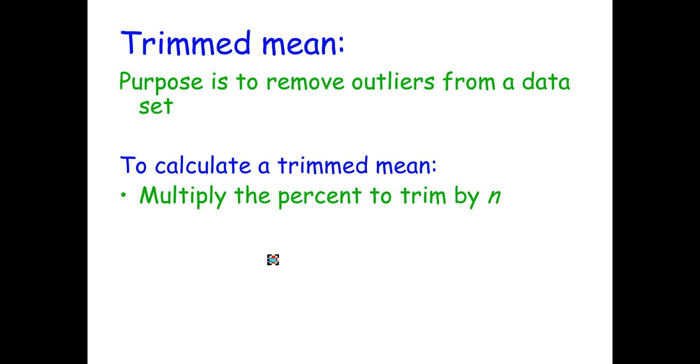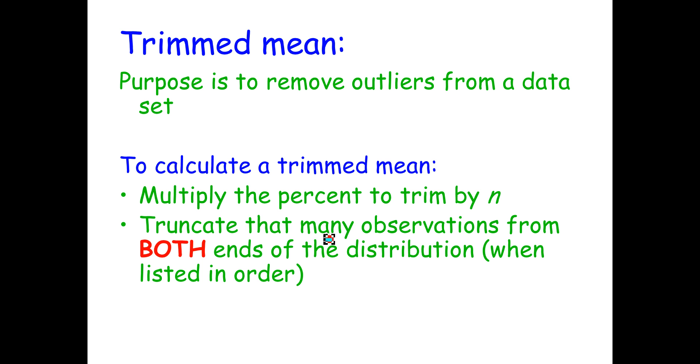And to calculate the trimmed mean, what we're going to do is essentially take off a data point from each end of the data set. I can't stress enough, when you trim the mean, you're taking off points from both ends of the data set. You're removing data points from both ends of the set.